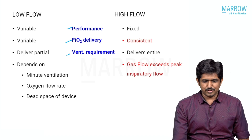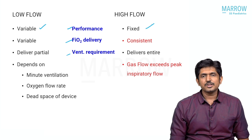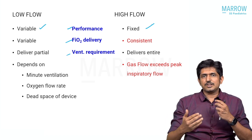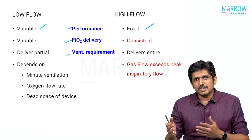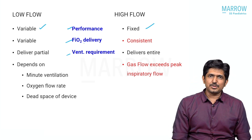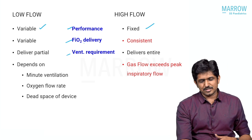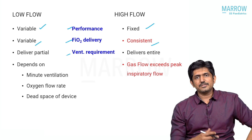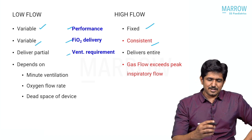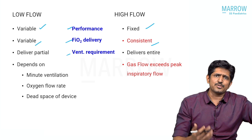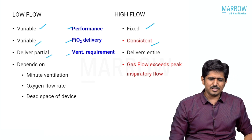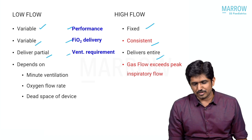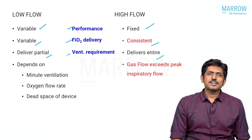This is called variable flow. In a high flow device, the flow is fixed — however much the patient breathes, the device flow would either match or exceed the patient's flow. Since there is flow variation in low flow devices, the FiO2 is also variable. In high flow, FiO2 delivery is consistent. Low flow delivers only a partial ventilation requirement, whereas high flow completely delivers equivalent to or more than the patient's flow demand, thus meeting the entire demand.